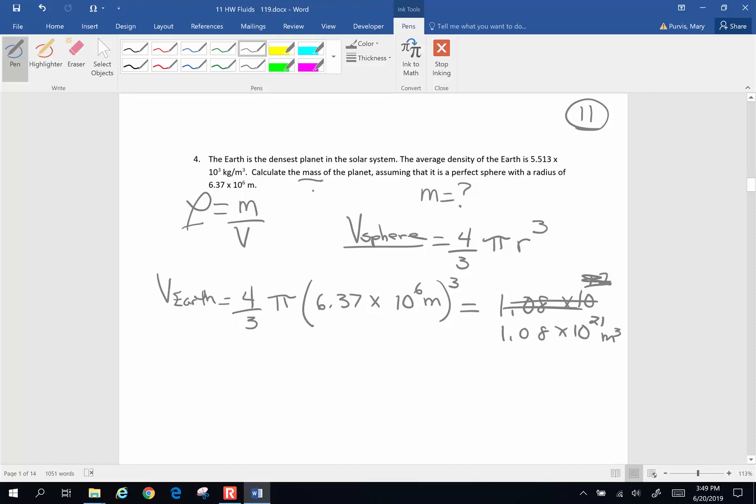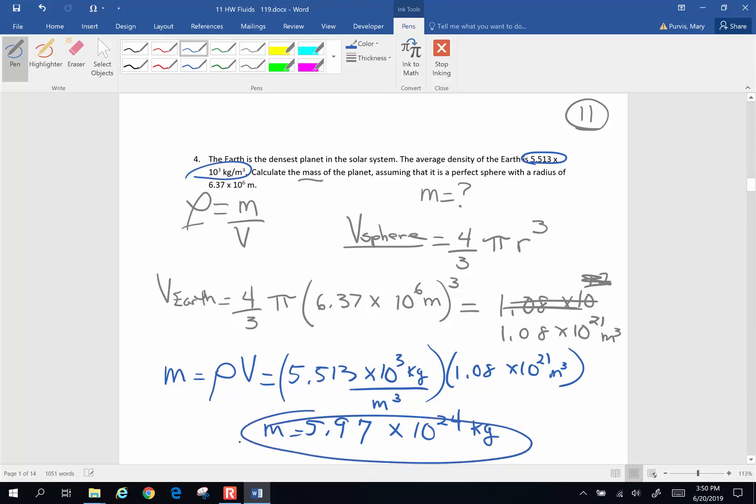Now in order to find the mass of the planet, mass is going to be density multiplied by volume. Density on average of planet Earth is 5.513 times 10 to the third kilograms per meter cubed times 1.08 times 10 to the 21st cubic meters. When I pass those digits into my calculator, I get a weight of just about 5.97 times 10 to the 24th kilograms. That is the mass of the Earth. It's a big planet we live on.